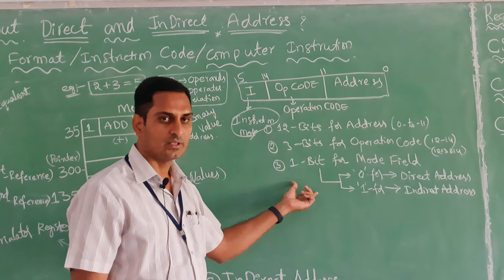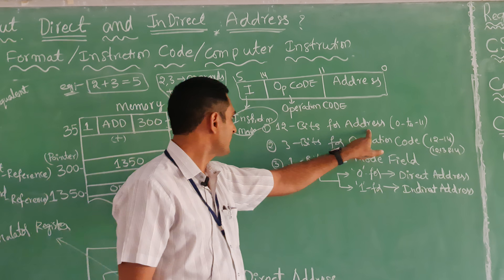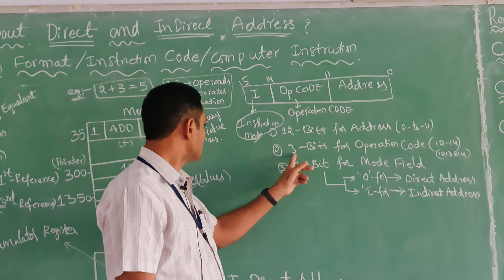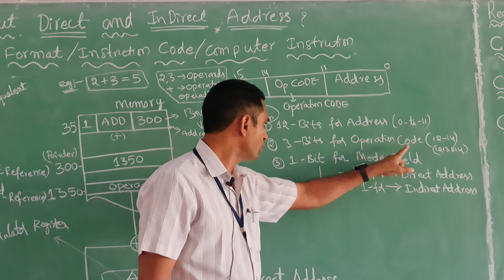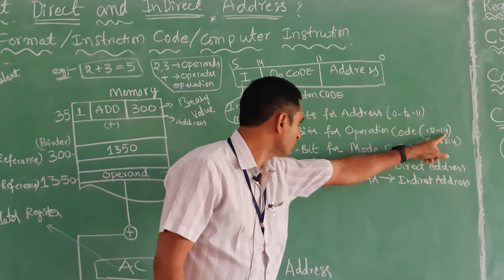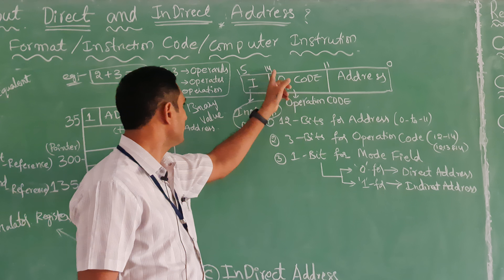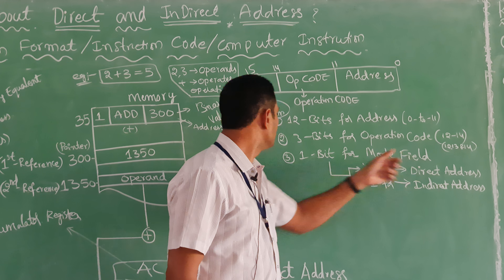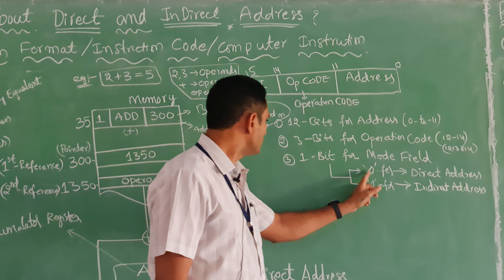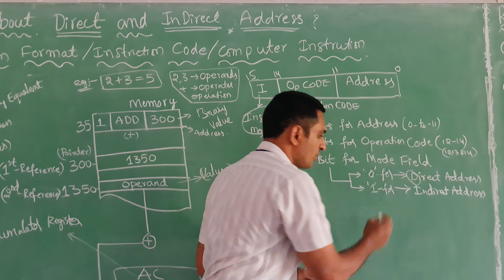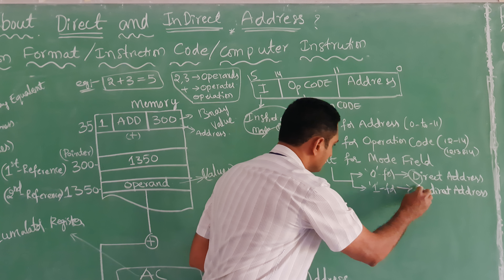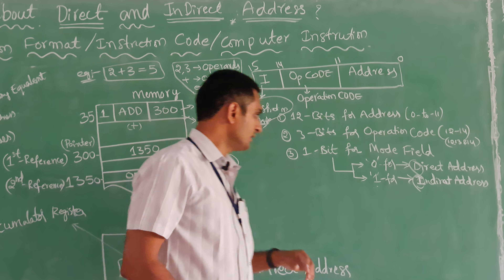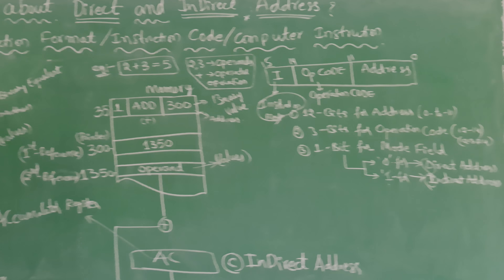So to summarize: bits 0 to 11 — 12 bits — are for the address, which stores the location of the operands. Bits 12 to 14 — 3 bits — are for the operation code, which decides what operation to perform. And 1 bit is for the instruction mode field: 0 for direct address, 1 for indirect address.